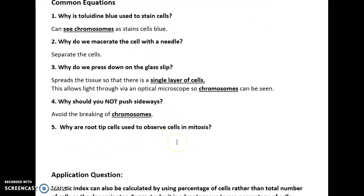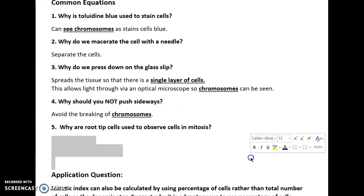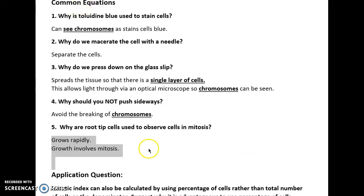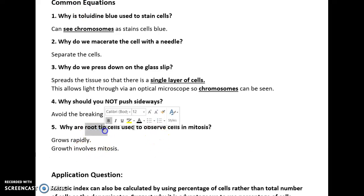Why are root tip cells used to observe cells in mitosis? That is because root tips grow rapidly, and growth involves mitosis. You need to link root tips to mitosis: they grow rapidly and growth is mitosis.